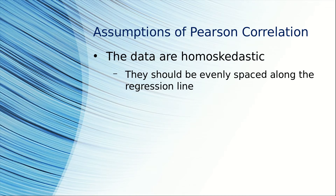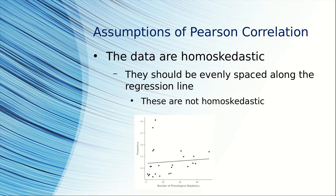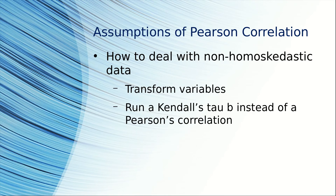The data also need to be homoscedastic — they need to be evenly spaced along the regression line. As you can see in this graph, these data points don't vary very much along the length of the line. But compare these: there's so much variation that we've got to say these data are not homoscedastic. What do you do if data aren't homoscedastic? Transform the variables or run a Kendall's tau b.